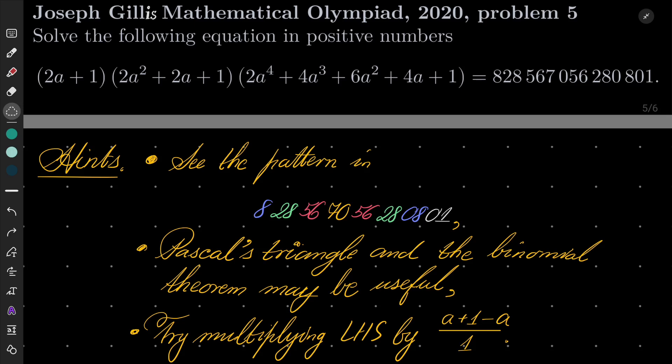My hints for this problem: This enormous number is not totally random. See the pattern in this number, which I color coded. A glance at Pascal's triangle and recalling the binomial theorem may be useful. In fact, will be useful. And then my last hint: try multiplying left hand side by (a+1-a)/(1), which is multiplying by 1 over 1. Give this problem a try and I will see you in a moment.